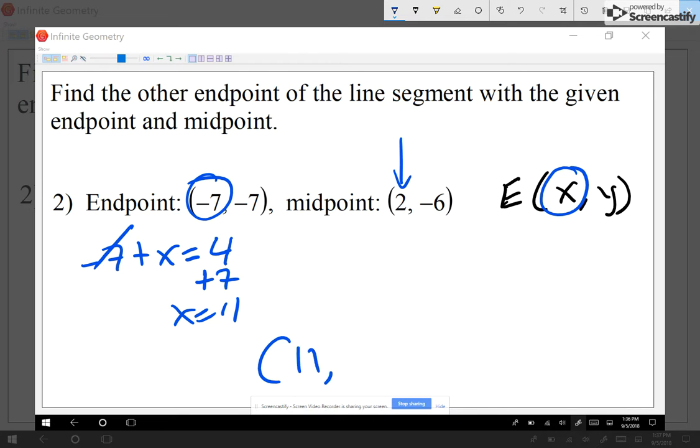Now negative 7 plus x equals 4. We can easily solve for x. We get that x is equal to 11. That's half of our answer. Now to find the y value, I'm gonna add the y values of the endpoints.